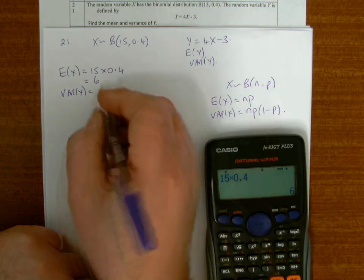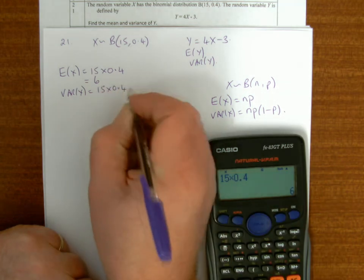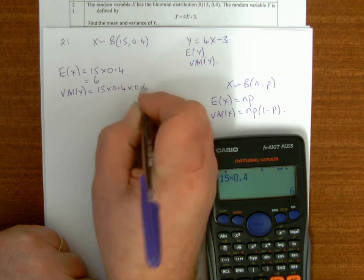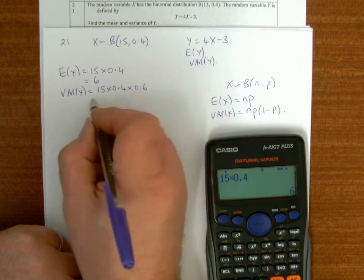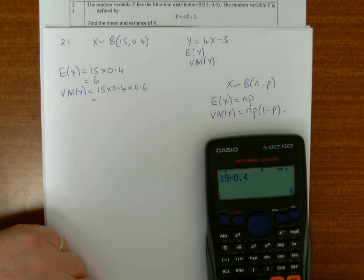1 minus 0.4 equals 0.6, and doing that I just need to times my previous answer by 0.6, which is 3.6.